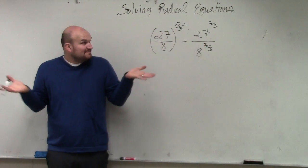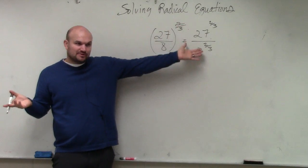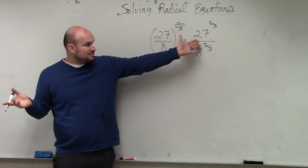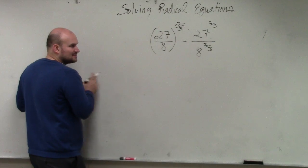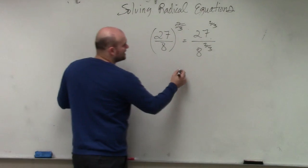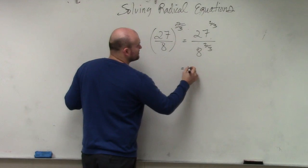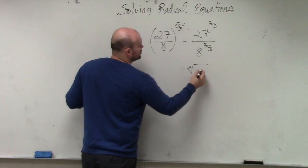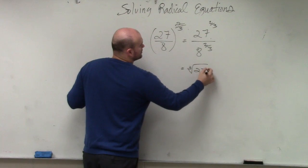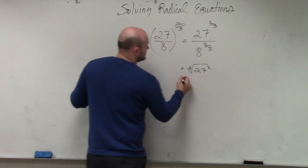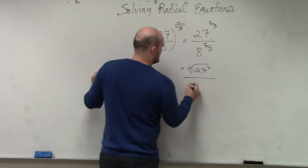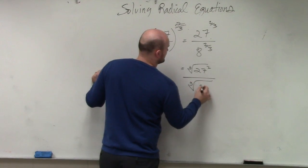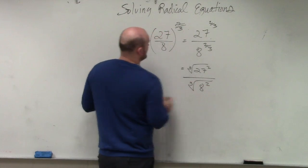That's using the power of quotient rule. Again, if you can rewrite them as radicals, a lot of times that can help you understand the problem better. So really, that's the cube root of 27 squared divided by the cube root of 8 squared.